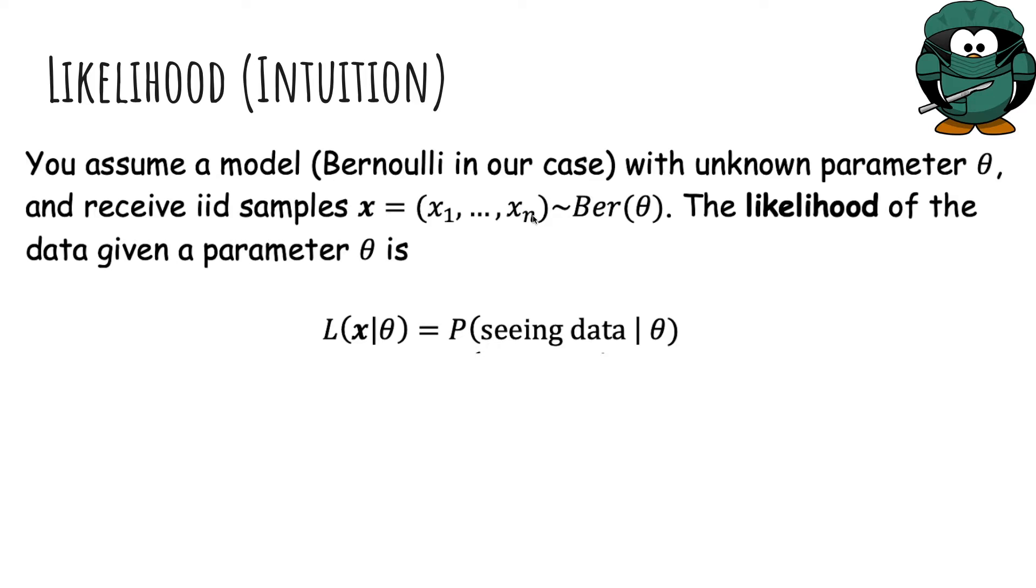The likelihood of the data given a parameter theta is defined to be the probability of seeing the data given theta. So this is the probability that we saw x1, and x2, and all the way to xn. So like probability of seeing heads first, and then tails, and heads, and so on. And because they're independent, we can multiply them. So the probability of seeing x1 times the probability of seeing x2, all the way to xn. And that's the likelihood.